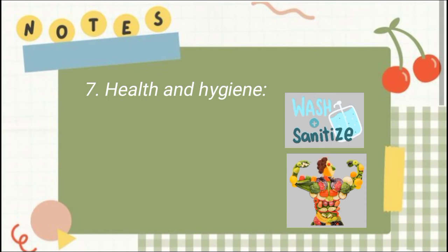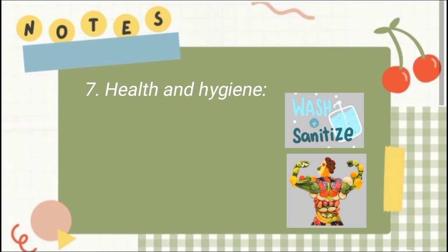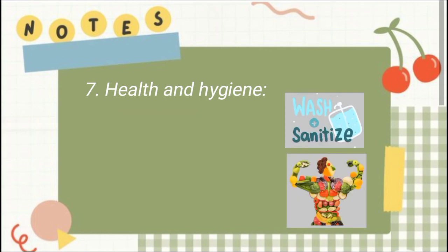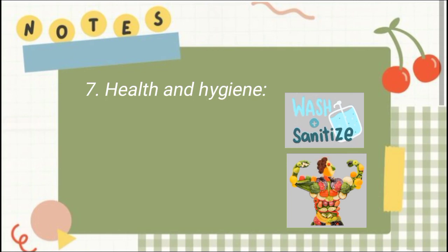Number seven: health and hygiene. In classes on health and hygiene, students learn how to prepare and preserve foods to prevent diseases. This area of home economics education also used to have a big focus on properly caring for sick people, as it was essential that young women had an understanding of how to care for the sick in their community.